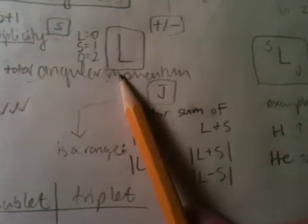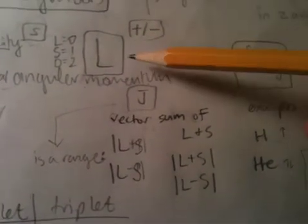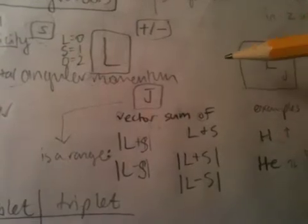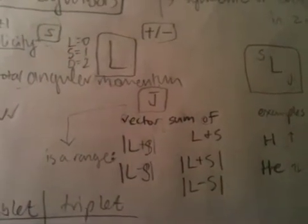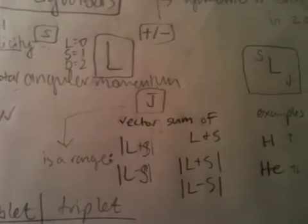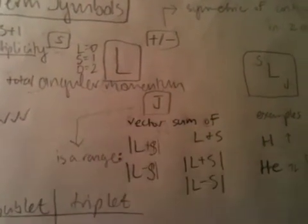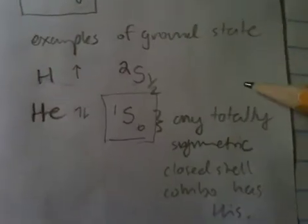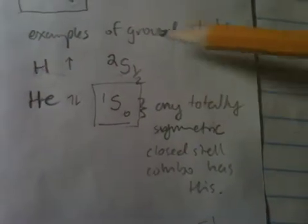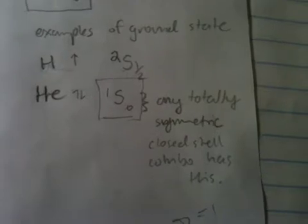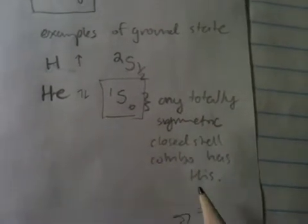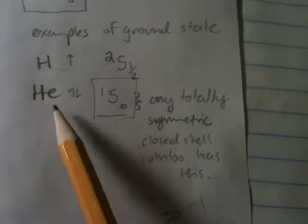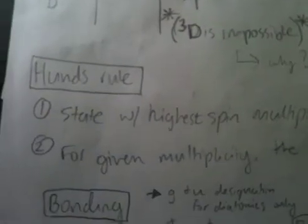Angular momentum, this is usually given by the symmetry of the electrons, and what the total net angular momentum is, and your vector sums. Here are some examples of what they look like. 2s1.5 for hydrogen, 1s0 for helium. This state is given for any totally symmetric closed shell combination. So, anything that is perfectly symmetrical.